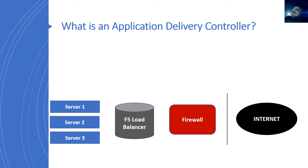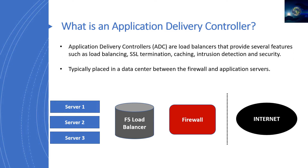So what exactly is an application delivery controller? An application delivery controller is essentially a load balancer that offers several services such as load balancing, SSL termination and offloading, caching, intrusion detection, security, application performance optimization, and a lot more. It not only offers basic load balancing but a lot more. The primary objective these ADCs or load balancers are used for is when we have thousands of requests coming to our servers at the same time and we want to optimize that — we use different load balancing techniques to distribute traffic accordingly for optimized performance.